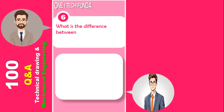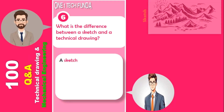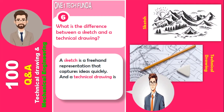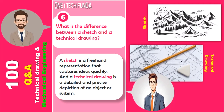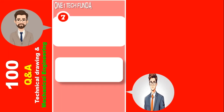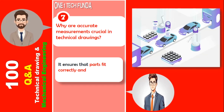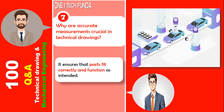What is the difference between a sketch and a technical drawing? A sketch is a freehand representation that captures ideas quickly, and a technical drawing is a detailed and precise depiction of an object or system. Accurate measurements are crucial because they ensure that parts fit correctly and function as intended.